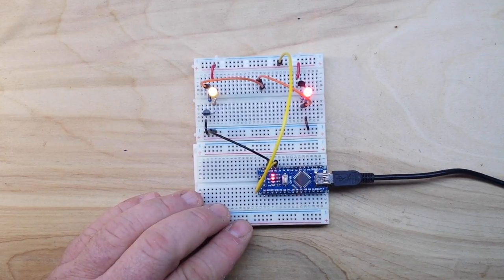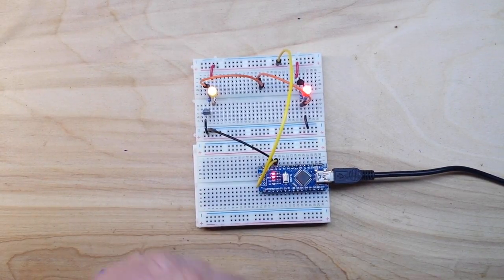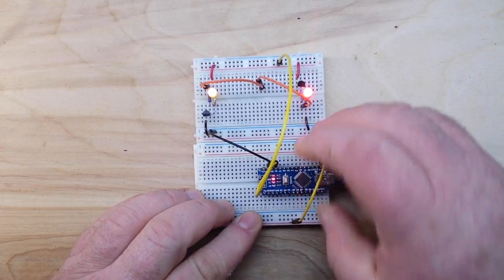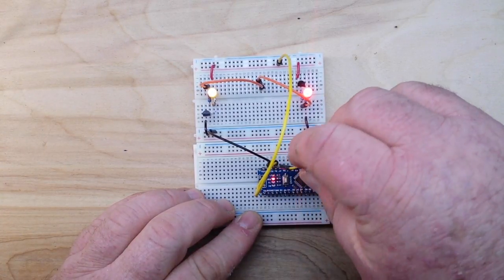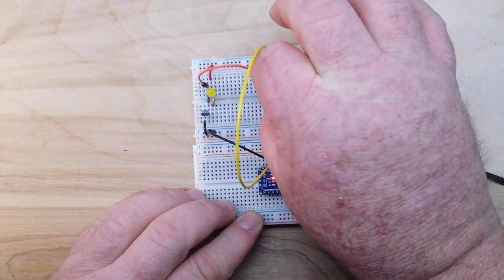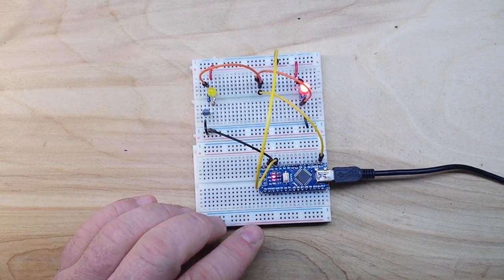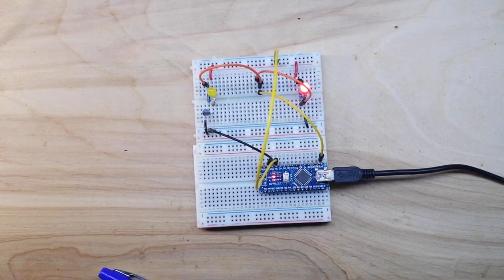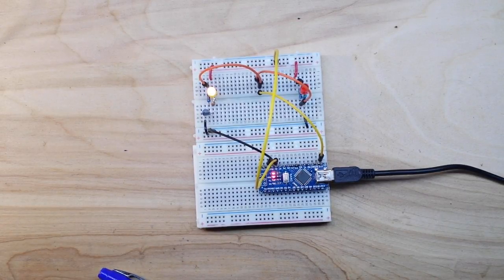But now let's connect pin D13 to our bases. And what's happening now? We have created a simple oscillator circuit.